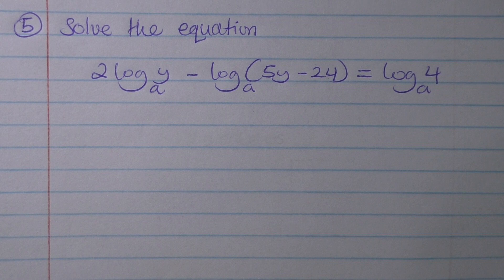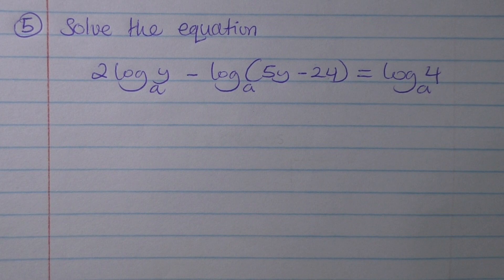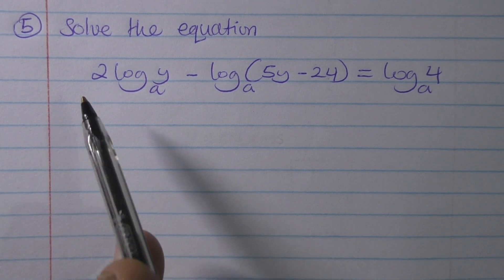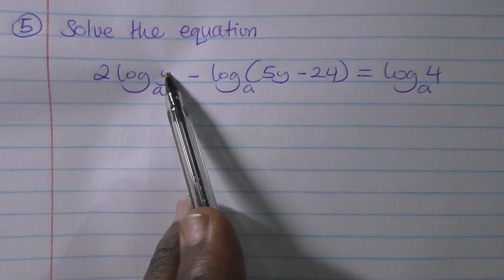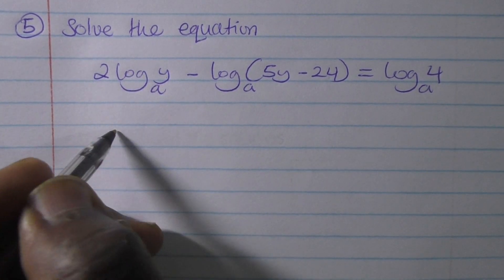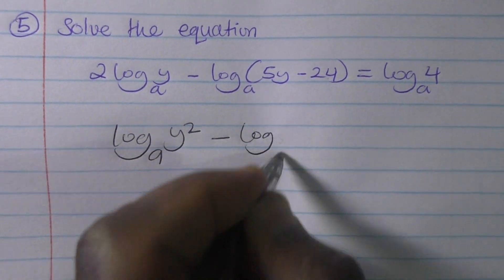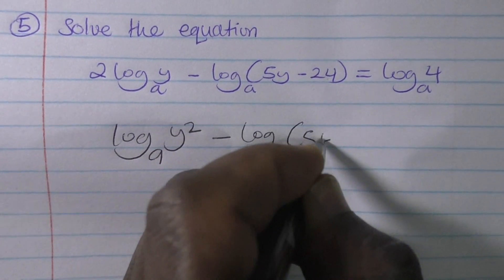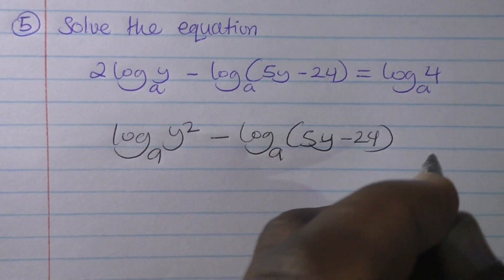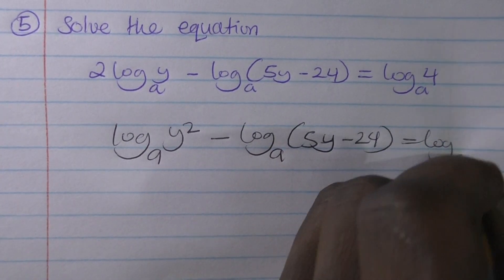So the first step always when you face such a challenge is to bring this power up, so that we get log base a of y squared minus log base a of (5y minus 24) equaling to log base a of 4.